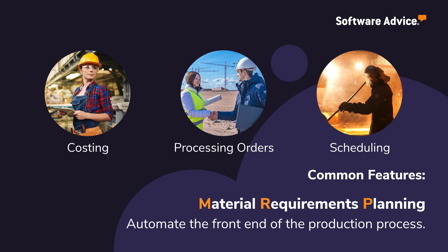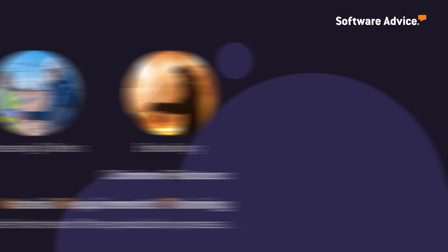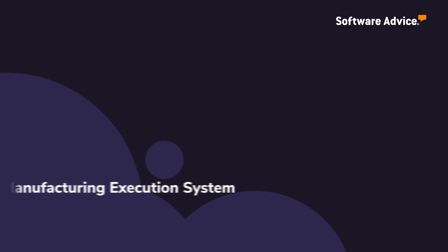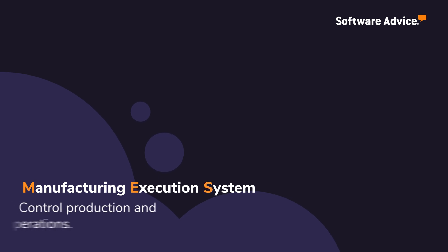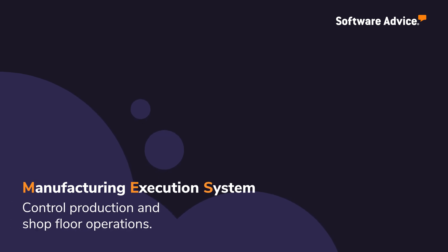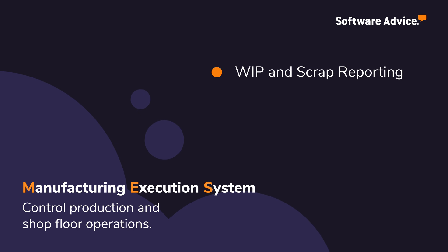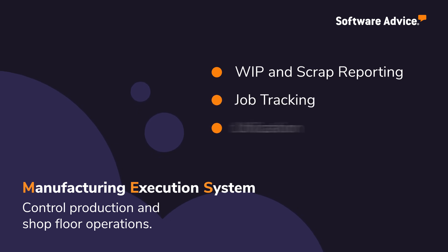MRP also handles scheduling construction. A Manufacturing Execution System, or MES, controls the actual production phase and shop floor operations. Functions include work in progress and scrap reporting, job tracking, and equipment utilization.